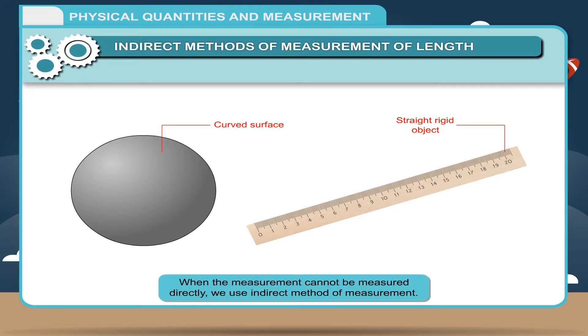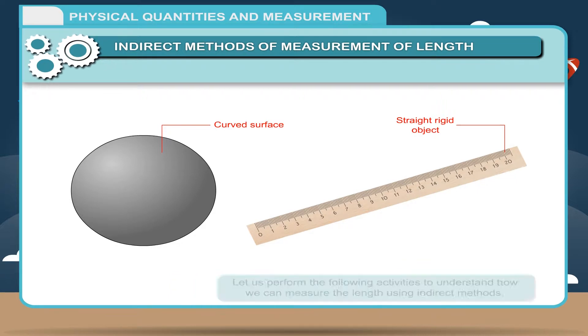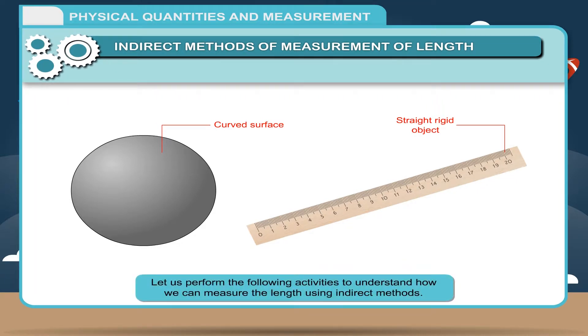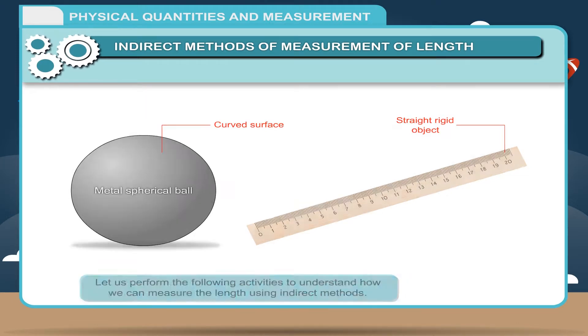When the measurement cannot be measured directly, we use indirect method of measurement. For this, the measurement system has to be modified. Let us perform the following activities to understand how we can measure the length using indirect methods.